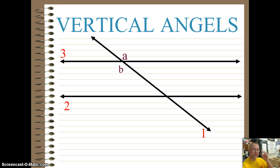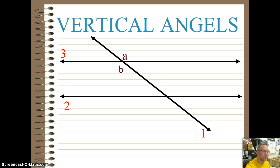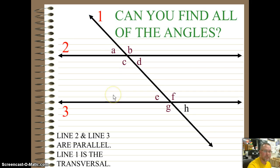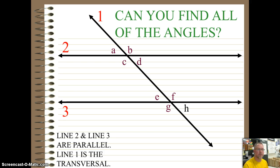Now we can put all this together. We have vertical angles here — A and B are vertical. We can also look at this angle, which we'll call C, as supplementary to angle A. So if I add these two together, it gives me that straight line, which is 180 degrees. You should be able to go through and identify all the different types of angles we've talked about. We're going to go through a couple more problems.